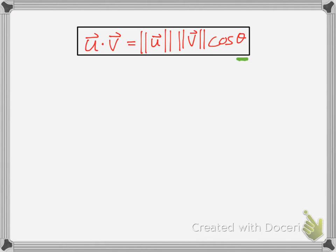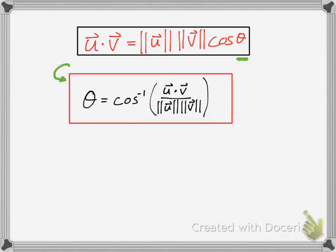So here is the original formula for the dot product. Now if we're looking for the angle between the product of the two vectors, you simply solve for theta, and then you get inverse cosine of the u vector times the v vector over the magnitude of each. And this is pretty much the formula we're going to be using when solving for the angle.